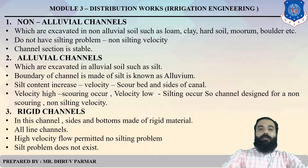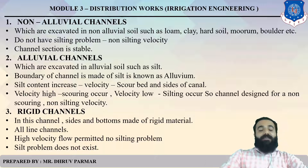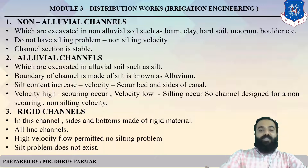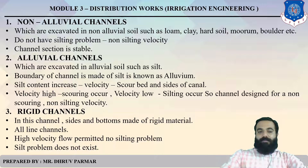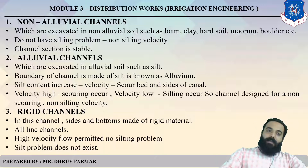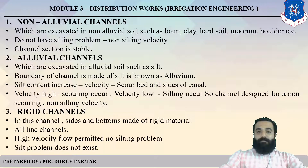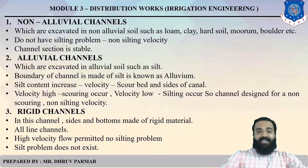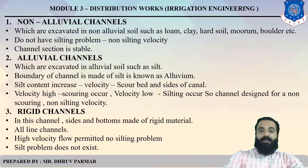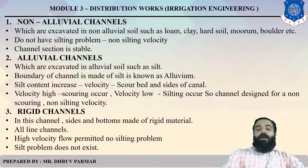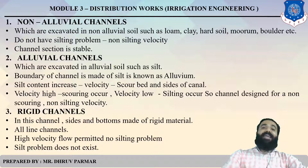In a non-alluvial channel, there are no silting problems and no scouring velocity is considered — the channel section is stable. In an alluvial channel, there is no stable section in the initial period. An alluvial channel is excavated in silt or alluvial soil — the boundary of the channel is made of silt. When silt content increases, if velocity is high, scouring occurs; if velocity is low, silting occurs. An alluvial channel is designed according to non-silting and non-scouring velocity.